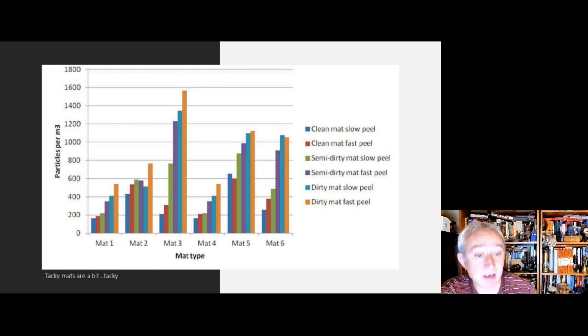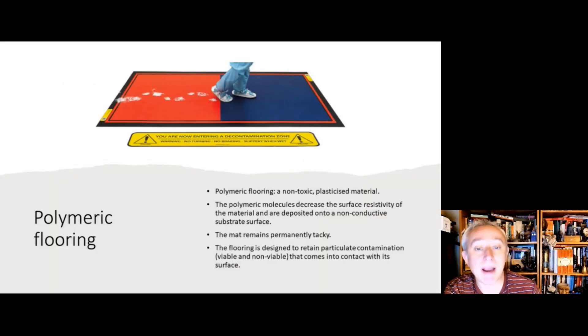What about polymeric flooring? Polymeric flooring is a polymeric surface manufactured from a type of non-toxic plasticized material. The polymeric molecules decrease the surface resistivity of the material, and this means there's a non-conductive substrate surface which means the mat remains permanently tacky. It's always going to adhere particles from one surface like the shoe to another.